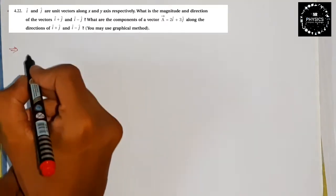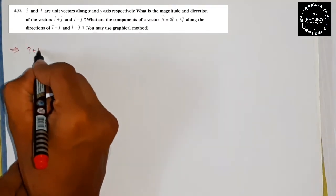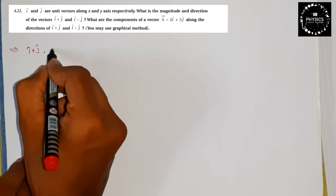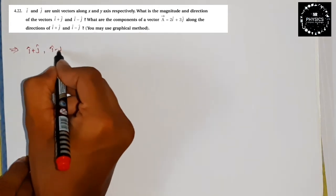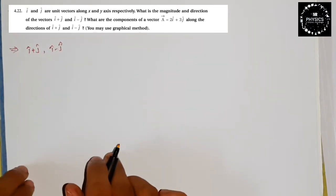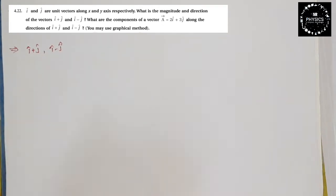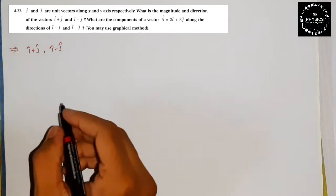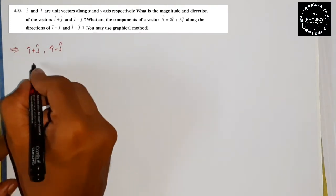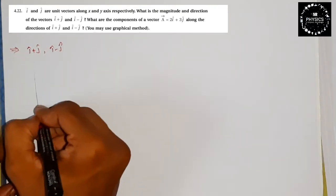So here we define (i+j) and (i-j). If we draw like this, we can visualize both vectors.